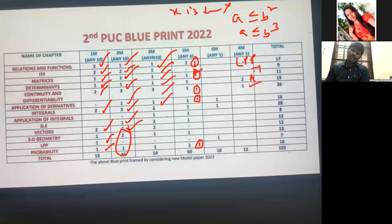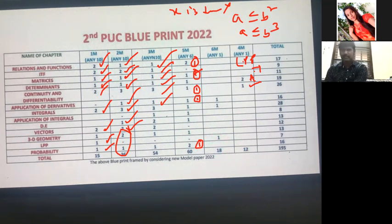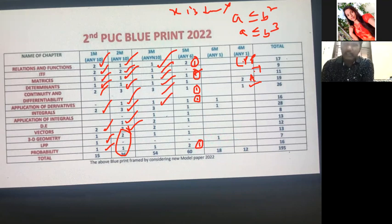Another three-mark integration question comes from Exercise 1, 2, or 3 — questions involving sin 4x, cos x type expressions. One question will come from definite integrals. For Application of Integration three-mark questions: x² = y and y = x, or similar simple parabola questions they will give.